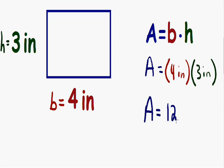Now the only thing we have to do is multiply: 4 times 3 is equal to 12. And we can't forget about our units — area is always expressed in square units, such as square feet, square meters, or square yards. Since we were given inches in this problem, our units are going to be square inches.